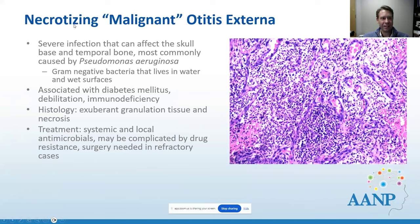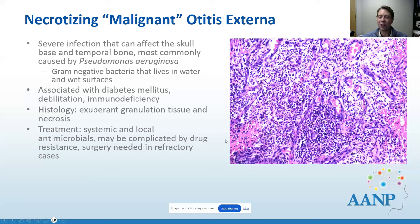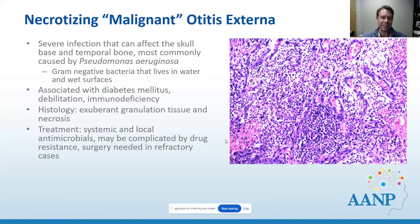Switching to bacteria: necrotizing malignant otitis externa can happen in the ear and progress to the skull base. This is caused by Pseudomonas, a bacterium that lives in water and wet surfaces, and is associated with diabetes, dehydration, and immunodeficiency. We see very dense granulation tissue. Treatment is with systemic and local antimicrobials, but there are problems with drug resistance. Sometimes cultures may not be obtained upfront, and we might need PCR pathogen testing in these cases.